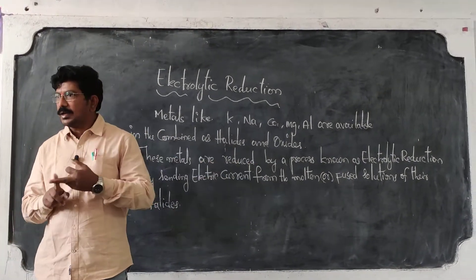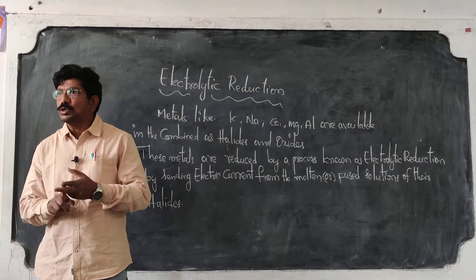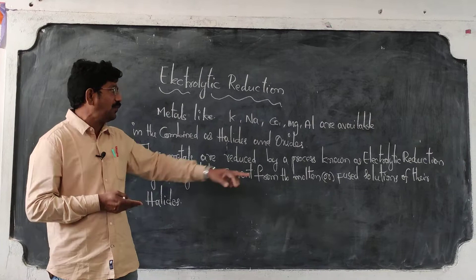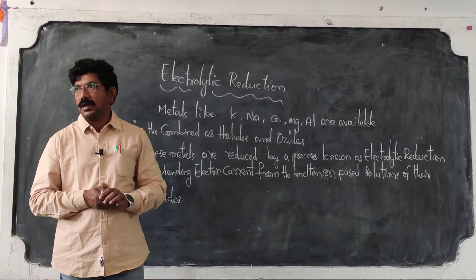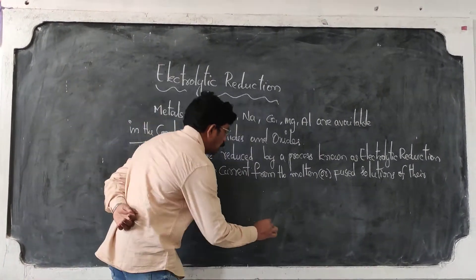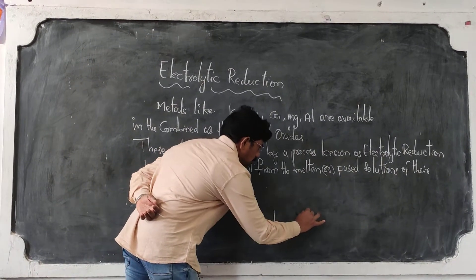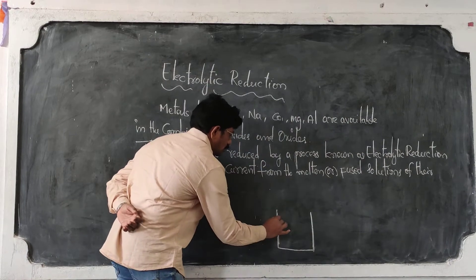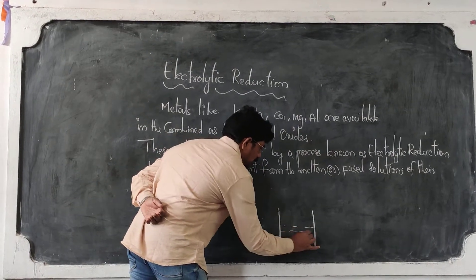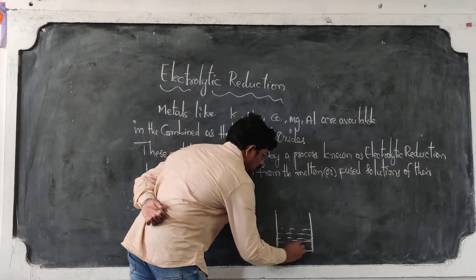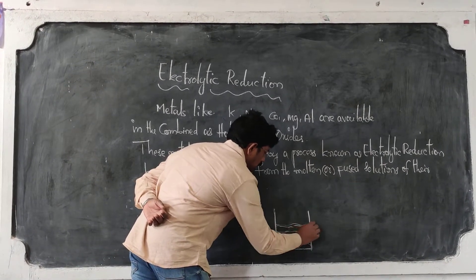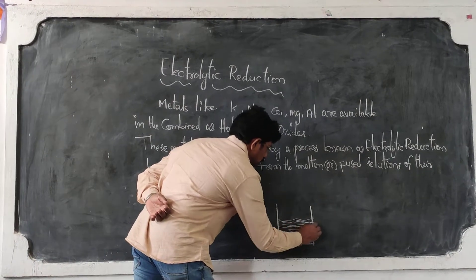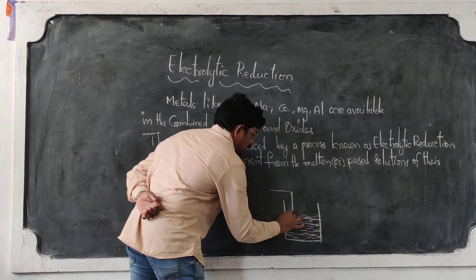Electrolytic reduction is a process of electrolysis in which we send electric current through the molten or fused solution of metal halides. In this process we take an electrolytic cell containing the fused or molten solutions and insert two electrodes.